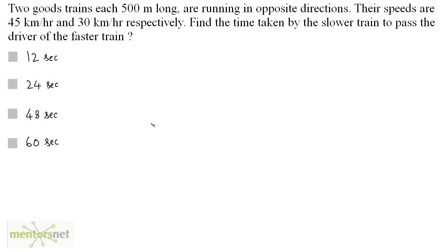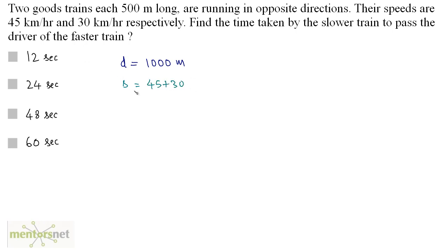Two goods trains each 500 meters long are running in opposite directions at speeds of 45 kilometers per hour and 30 kilometers per hour respectively. Find the time taken by the slower train to pass the driver of the faster train. This is essentially the time for the trains to cross each other. The relative distance is the sum of both train lengths: 500 plus 500 equals 1000 meters. The relative speed is 45 plus 30 equals 75 kilometers per hour.